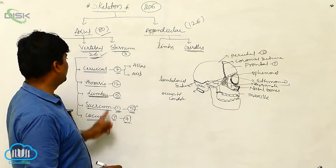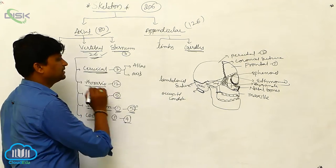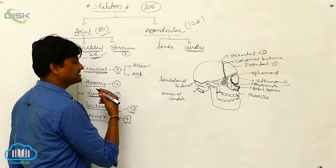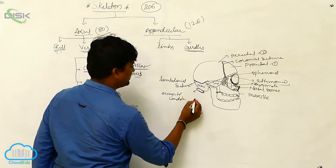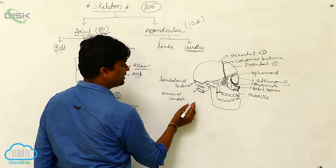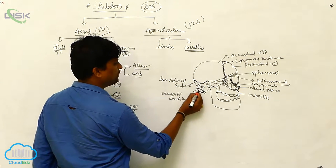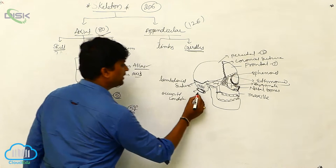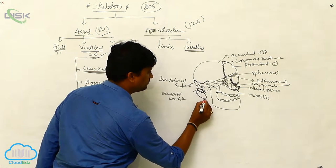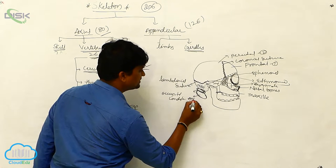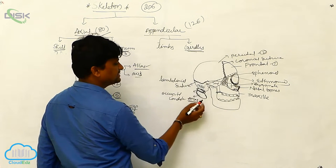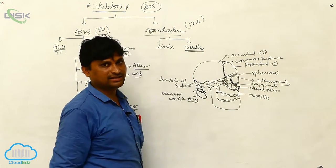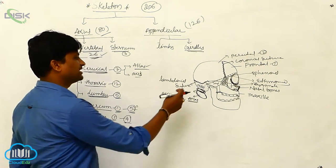In the cervical vertebra, the first vertebra is called the atlas and the second is the axis. The atlas is attached to the cranium via the occipital bone. The occipital bone has two condyles — cavity-like structures called occipital condyles — that articulate with the atlas. This is why the human skull is considered a dicondylic skull.